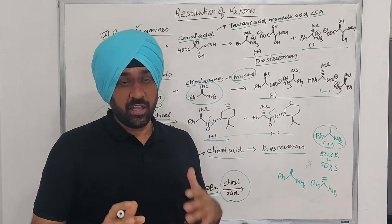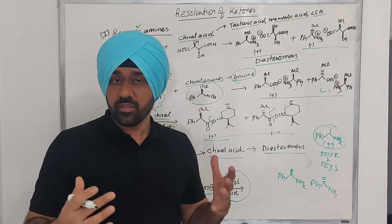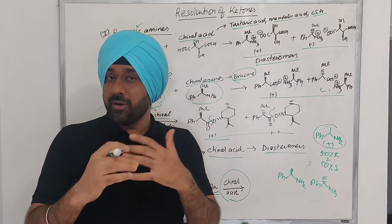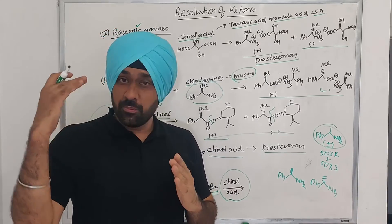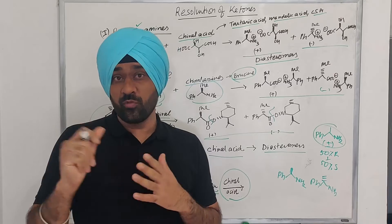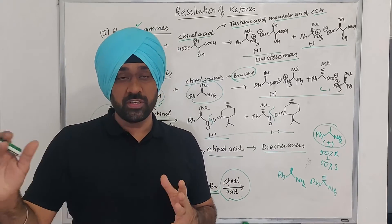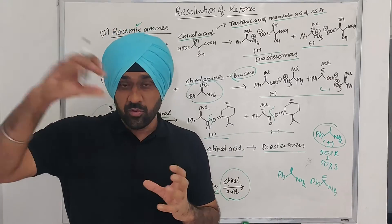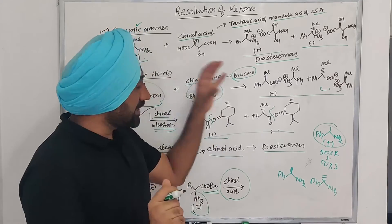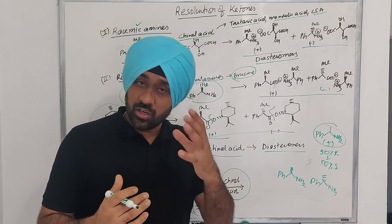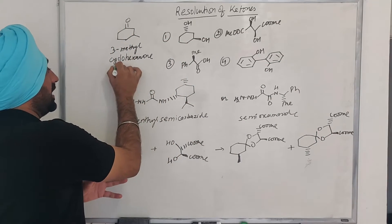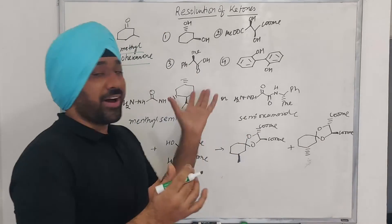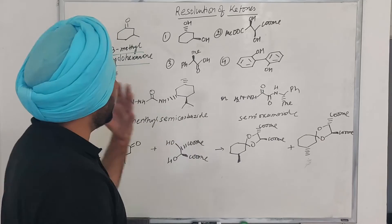So similarly in our case — the question I asked — they are talking about 3-methylcyclohexanone. So we must know what are the properties and reactions of ketones. We can think about imine formation, we can think about hydrazone formation or semicarbazide formation. We can think of many reactions. We can also think about acetal protection. We can have various chiral reagents like that.